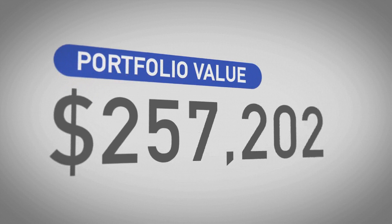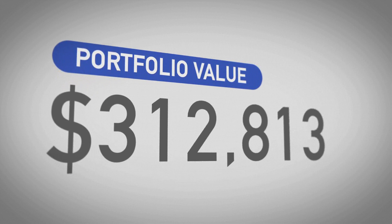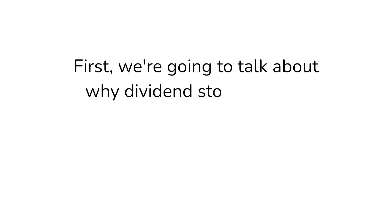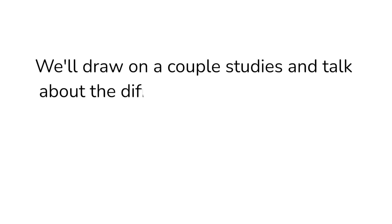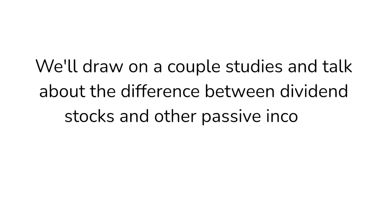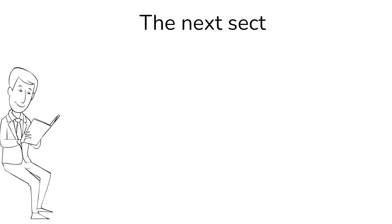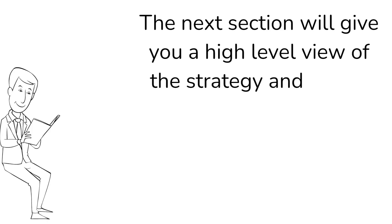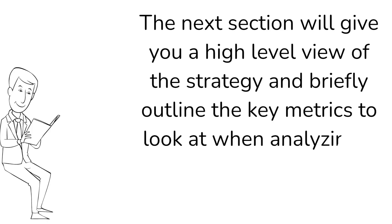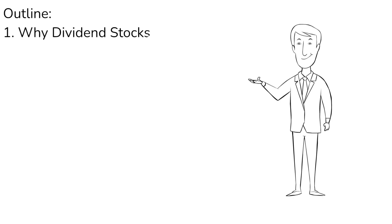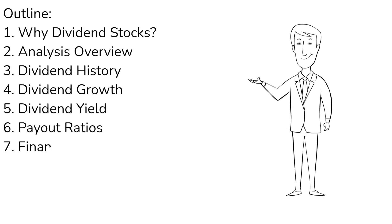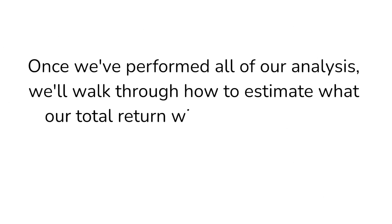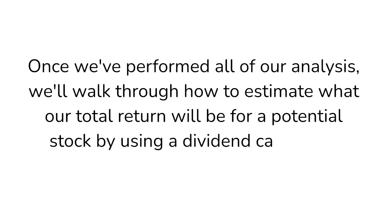Now that we've got rid of all the speculators, let's quickly overview what we'll cover in this video. First, we're going to talk about why dividend stocks are an excellent way to generate wealth and income in retirement. We'll draw on a couple of studies and talk about the difference between dividend stocks and other passive income methods you might hear about online. The next section will give you a high-level view of the strategy and briefly outline the key metrics to look at when analyzing a dividend stock. The following five sections will dive deep into analyzing dividend history, dividend growth, dividend yield, payout ratios, and financial growth. Once we've performed all of our analysis, we'll walk through how to estimate our total return for a potential stock by using a dividend calculator.